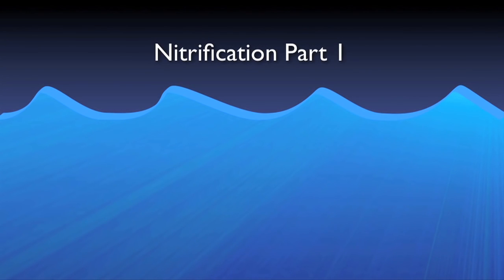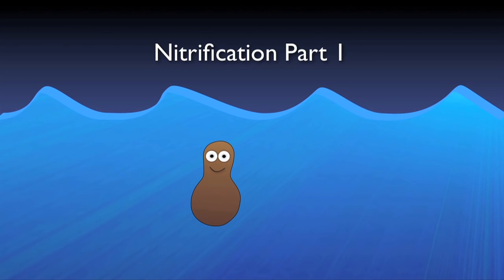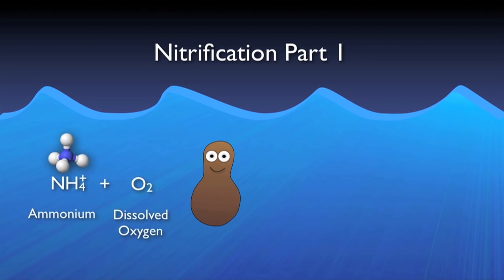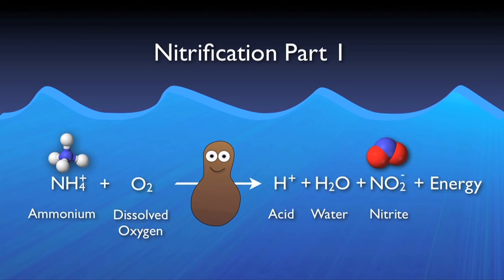Once a healthy population of nitrifiers has developed in your system, the first step — performed largely by a group of bugs known as ammonia oxidizers — will take the ammonium and DO and convert it into acid, water, nitrite, and energy. If your system doesn't have adequate alkalinity, the acid produced here could create inhospitably acidic conditions for the bacteria, resulting in major process hiccups including loss of nitrification. The water produced is absorbed in the system, the nitrite moves on to the next step, and the energy is used by the bacteria to grow and multiply.